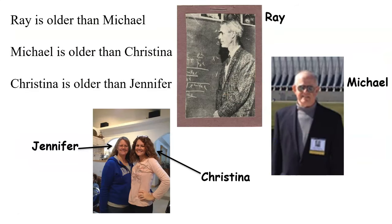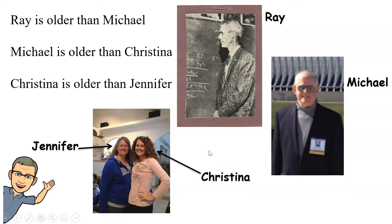Here's a family example. My grandpa Ray is older than my dad Michael. Michael is older than my sister Christina. And Christina is older than Jennifer. You don't know how old any of them are, but from this order you know Jennifer is the youngest and Ray is the oldest. In relative order, Ray would be furthest down on the list and Jennifer would be at the top — older at the bottom, younger at the top.